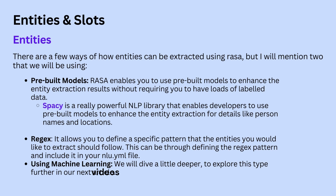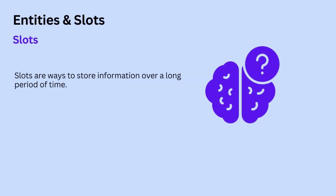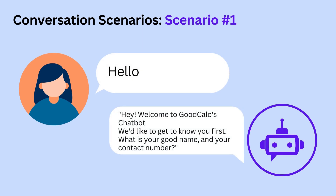The third approach is machine learning, which we will look at in future videos. As for slots, slots are ways to store information over a long period of time. If we want to perform a certain action using information gained earlier in the conversation, we can store that information in slots. We can think of slots as long-term memories that the assistant has. If we want to use that information later to perform an action or mention it in a later response, we configure the chatbot to store it in slots.